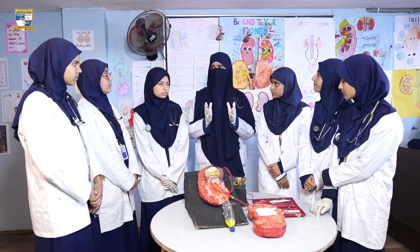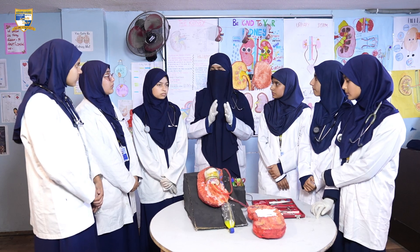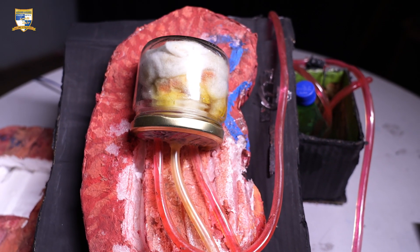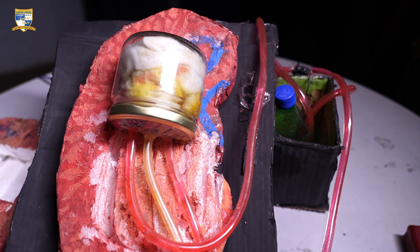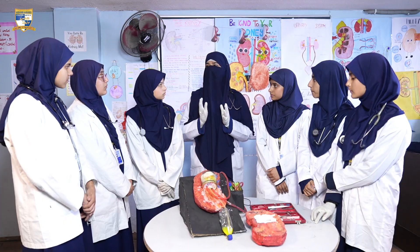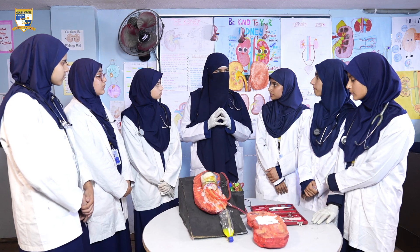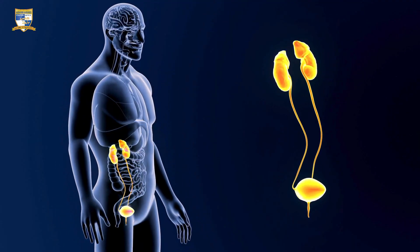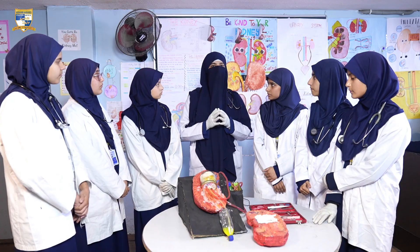Kidneys are a pair of organs that help us in the filtration of blood and extra water to produce urine. Kidneys are located in the abdomen on either side of the spine, just below the ribcage.